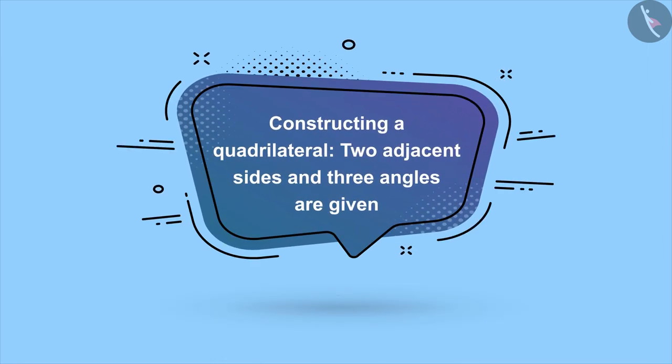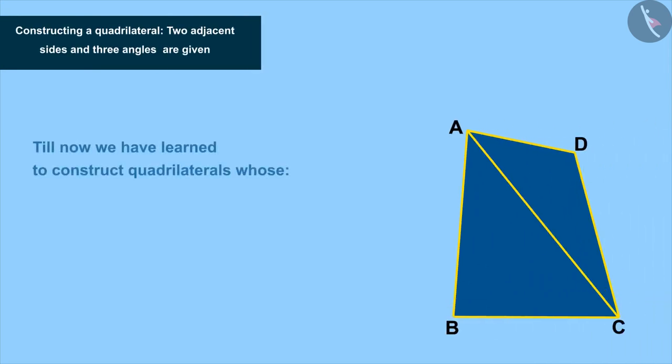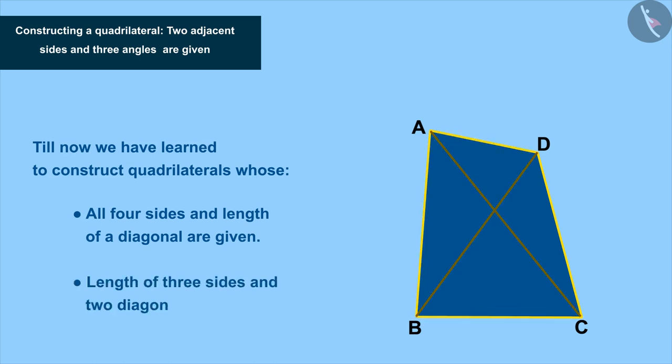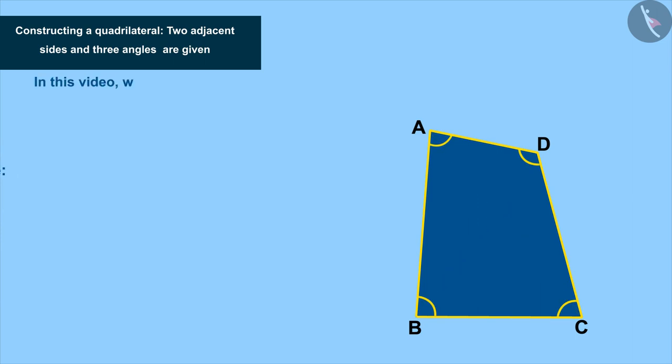Welcome to this video. Till now we have learned the construction of quadrilaterals whose all four sides and length of a diagonal are given, or length of three sides and two diagonals are given. In this video, we will learn to construct a quadrilateral in which the measure of two adjacent sides and three angles are given.